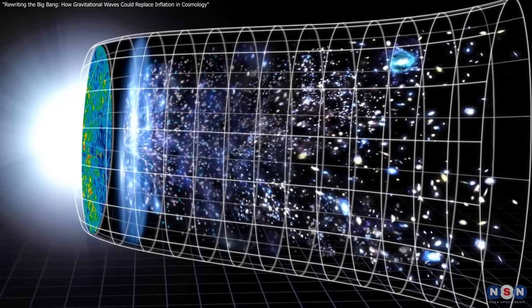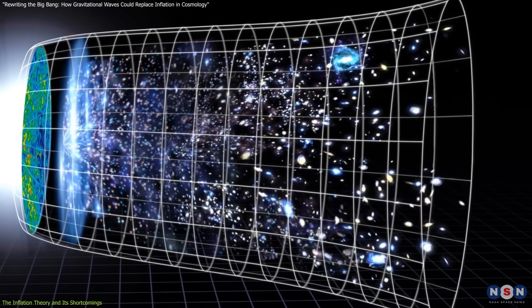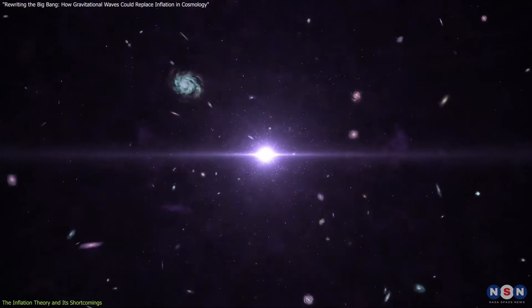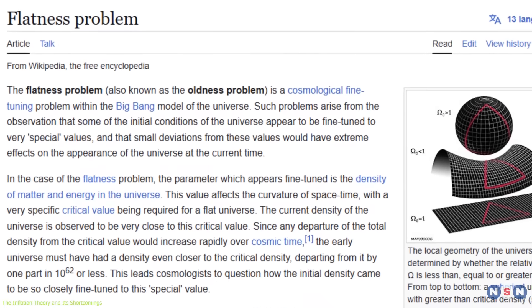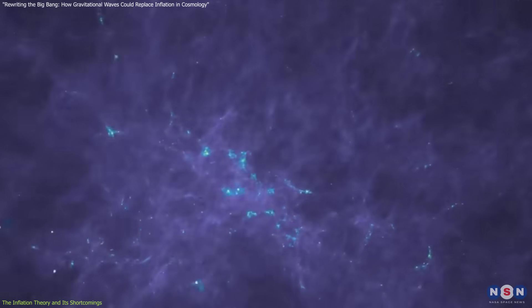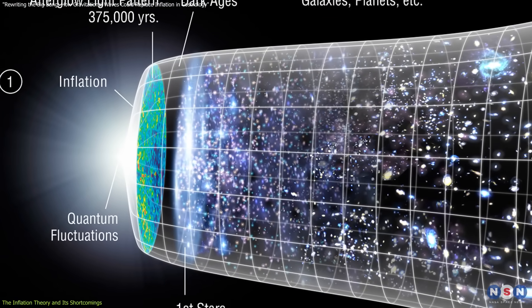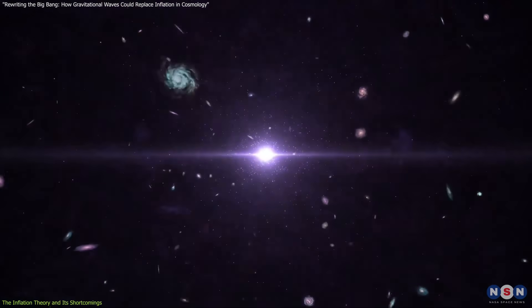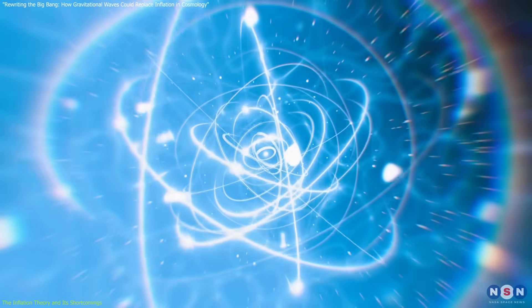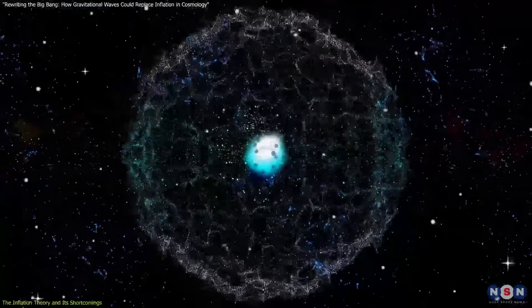The inflationary model has long been a cornerstone of cosmological theory. Proposed in the early 1980s, it was designed to address several glaring issues in the Big Bang theory, such as the horizon problem, the flatness problem, and the origin of the universe's large-scale structure. Inflation suggests that in the first fractions of a second after the Big Bang, the universe expanded exponentially, growing from subatomic scales to something the size of a grapefruit or larger in less than a second.